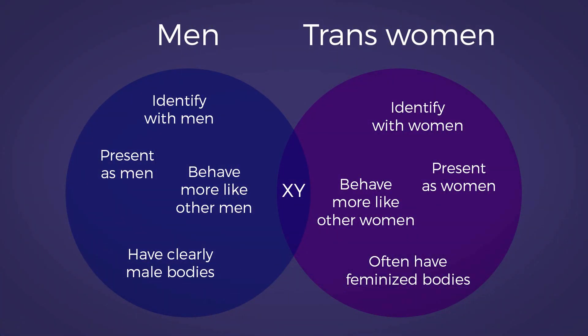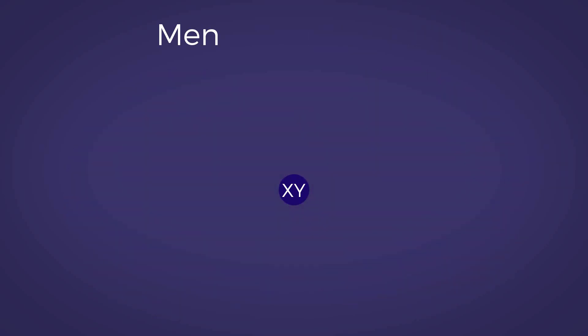Trans people are an edge case of this model — a specific and well-known instance where the one-to-one mappings of XX to women and XY to men no longer allow you to make accurate inferences about a person. Men tend to identify themselves as belonging to the general social group known as men, present in a way that allows them to be recognized as men, behave in ways more similar to other men than to women, and have an unambiguously male physiology. Trans women generally don't exhibit these features, yet the binary chromosomal definition groups them together with men based solely on their chromosomes. If man is equated to XY, then all the word man will tell you is that someone has XY chromosomes — nothing more. It loses a great deal of its value as a useful and informative term, because it disregards and even contradicts the other meanings associated with the word man in common usage.